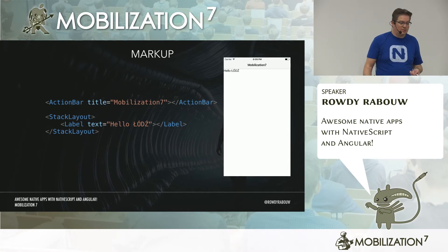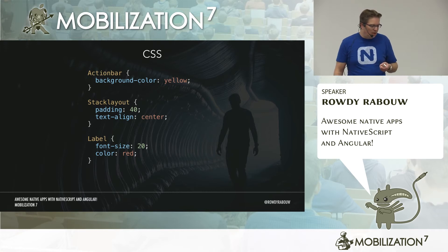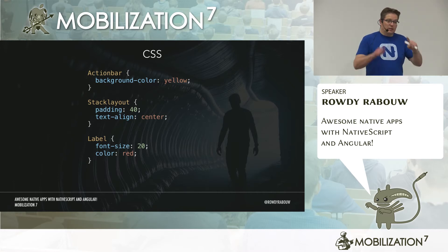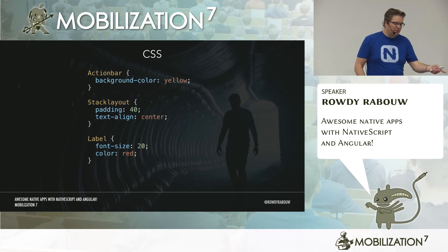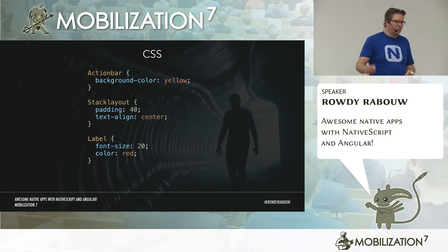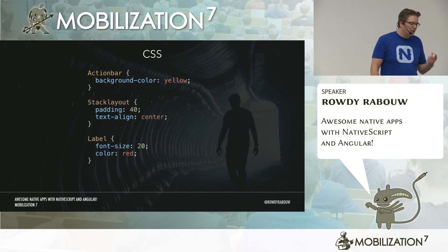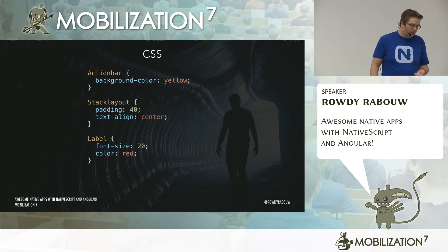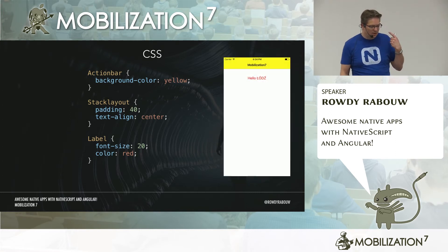You can style it with CSS. You can style directly on the element — the action bar background should be yellow, the stack layout should have 40 device-independent pixels of padding on all sides, align text center, and the label should have a font size of 20 and be red. It looks already more beautiful, but not shippable.